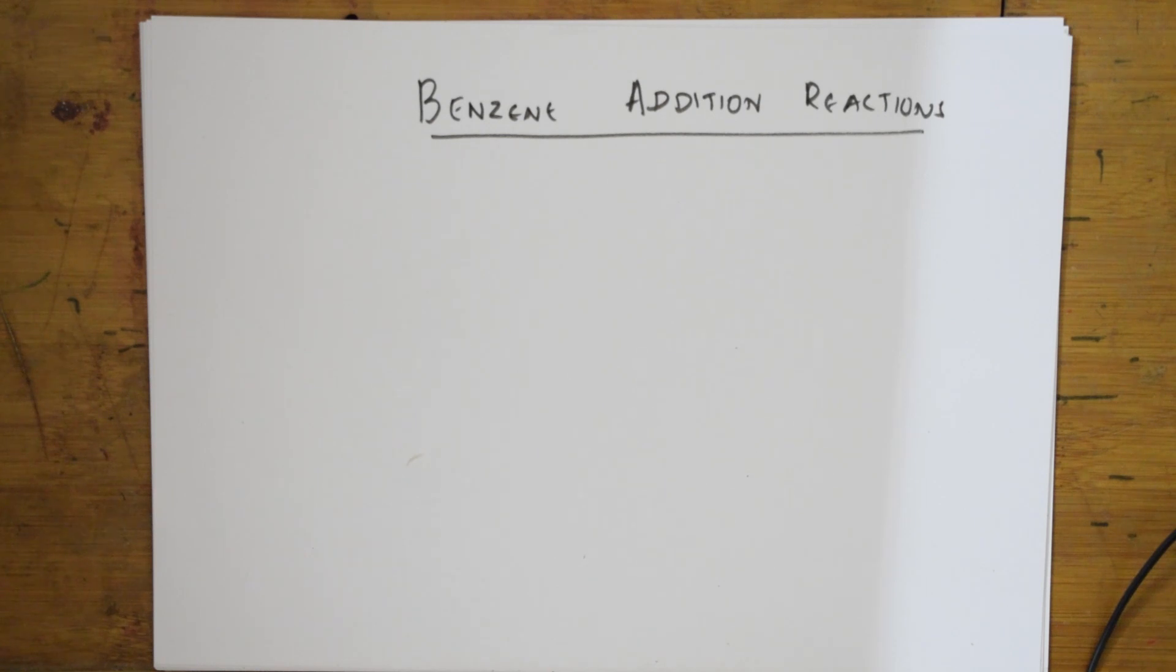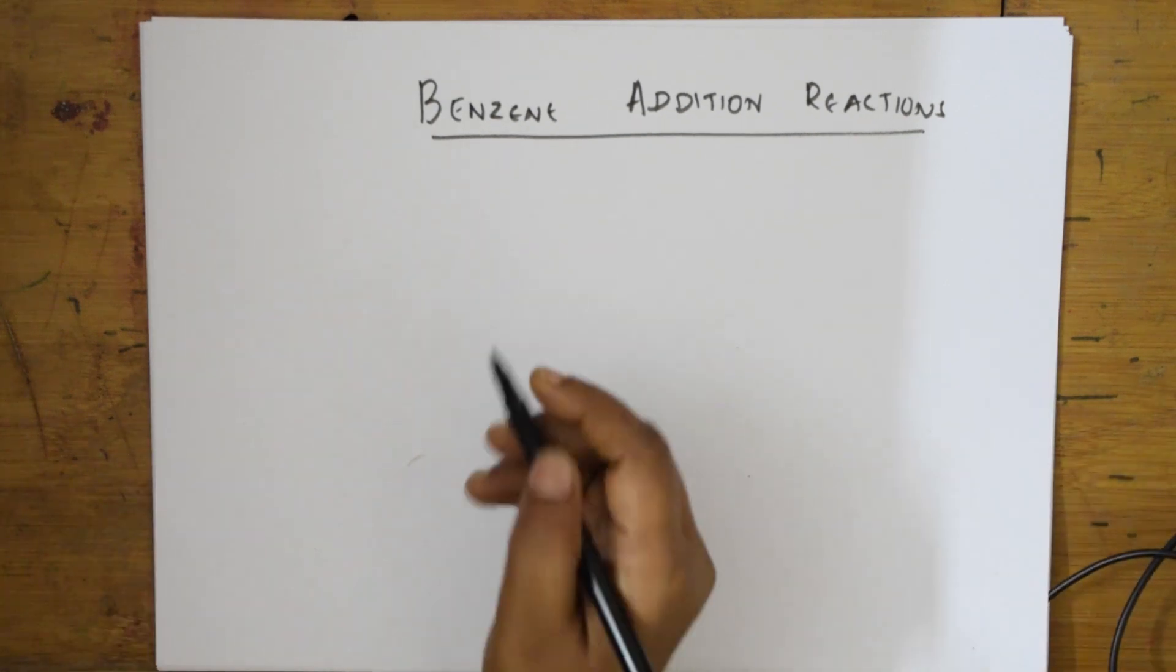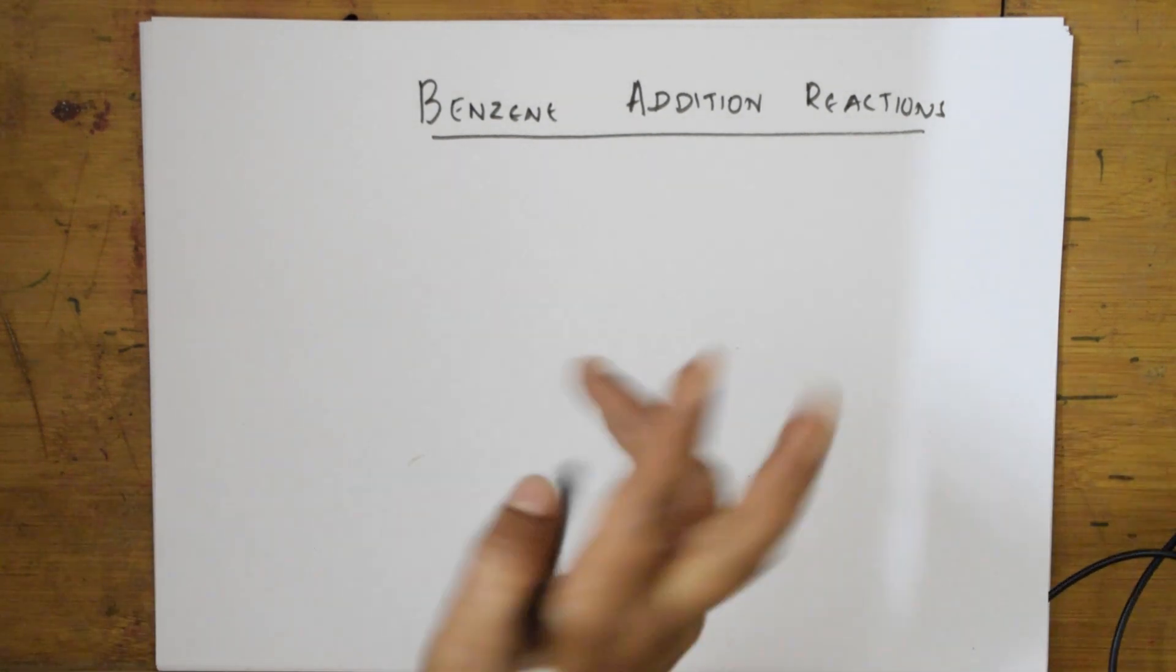In today's video we will be learning benzene addition reactions and gradually I will take you into substitution. As we have seen, benzene undergoes very few, only two addition reactions. Beyond that it undergoes electrophilic substitution reactions. The reason is the delocalization of pi electrons.